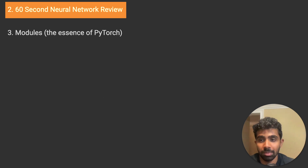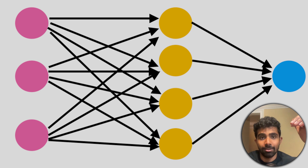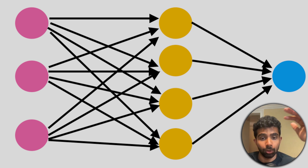On to our 60-second neural network review. If you're already familiar with neural networks you can skip this using the chapters in the description. But if you're not, this part is essential — everything else depends on a general understanding. A neural network diagram is on screen now, and we're going to break it down. By the end of the video we'll learn how to actually code up this diagram as a PyTorch class.